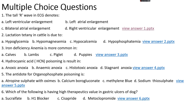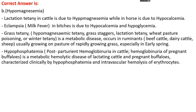Question number 2. Lactation tetany in cattle is due to: options A, hypoglycemia; options B, hypomagnesemia; option C, hypocalcemia; or options D, hypophosphatemia. The right answer is option B, that is hypomagnesemia. Lactation tetany in cattle occurs due to hypomagnesemic conditions, where there is a low magnesium level in blood. In horses, it is due to hypocalcemic conditions, where there is a low calcium level in blood.